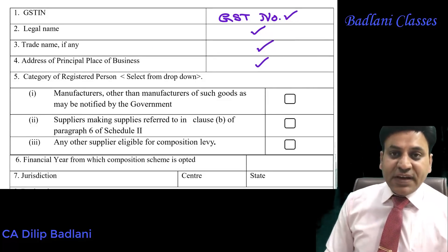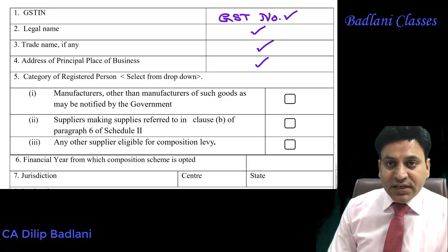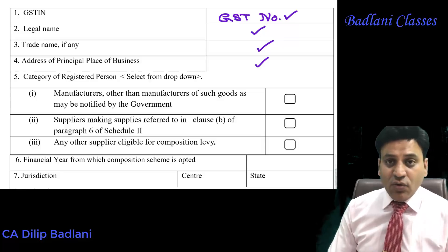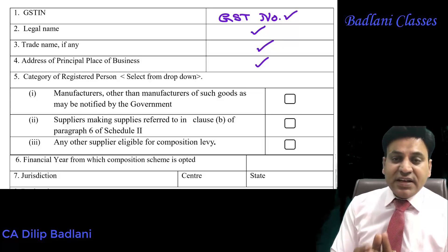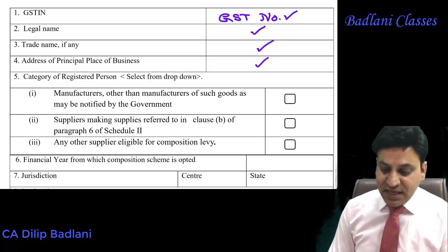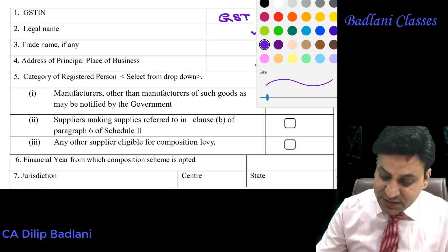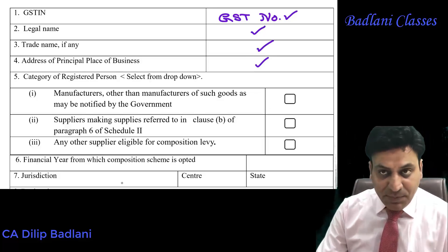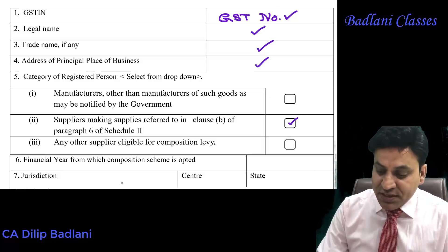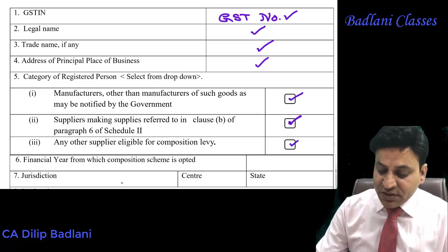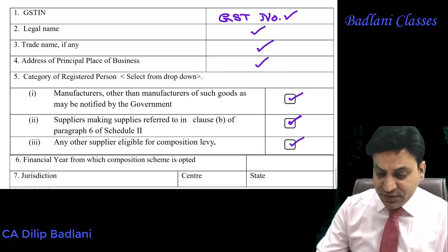आप manufacturer हैं, आप trader हैं, या फिर आप restaurant services चलाते हैं। यह ध्यान रखेंगे कि restaurant services देने वाले को - service supplier - केवल restaurant services यहाँ पर शामिल हैं। This is not applicable for all types of service suppliers, only for restaurant. यह आपका manufacturer और यह trader - ठीक है।